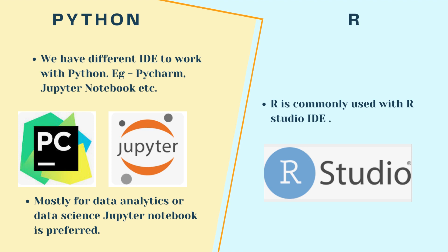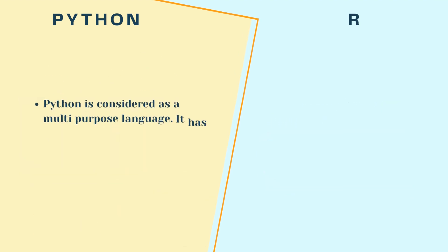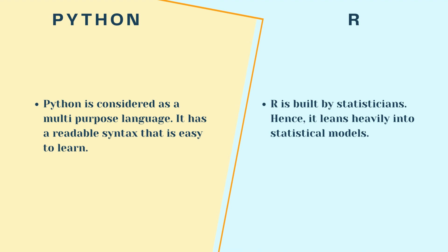Both Python and R are widely supported by large communities. Python is considered as a multipurpose language. It has a readable syntax that is easy to learn. On the other hand, R is built by statisticians and leans heavily into statistical models.